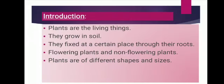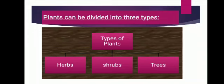Plants are of different sizes. As per their sizes, we call them with different names — small ones we call plants and the bigger ones we call trees. But is there a systematic way of classifying plants? On the basis of their size, shape and lifespan, plants are divided into three types: herbs, shrubs and trees.